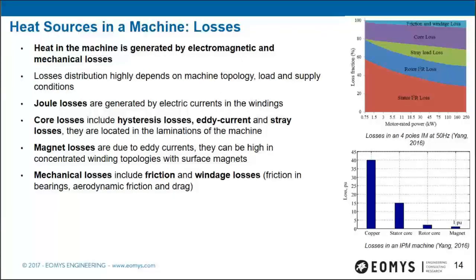Heat in an electric machine is generated by electromagnetic and mechanical losses. The losses distribution depends on the machine topology, load, and supply conditions. There are four main kinds: Joule losses from electric currents; core losses including hysteresis, eddy current, and stray losses in the laminations; magnet losses due to eddy currents in the magnets; and mechanical losses including friction and windage.